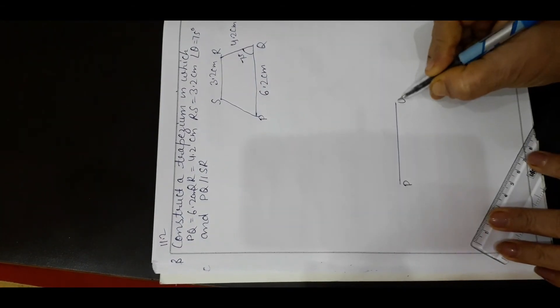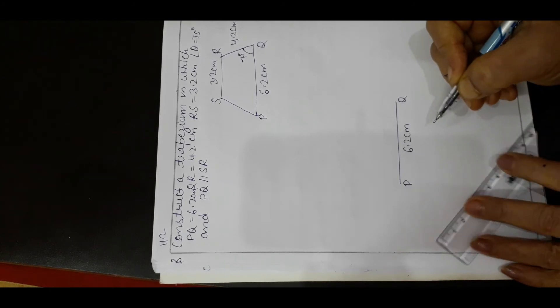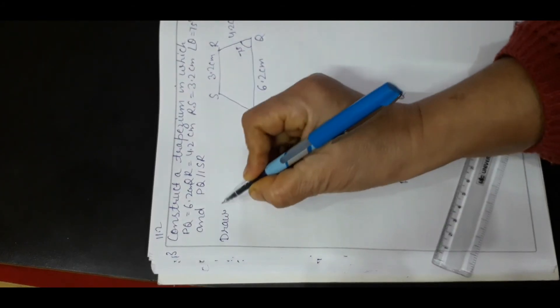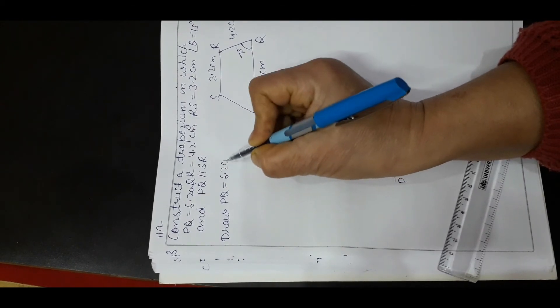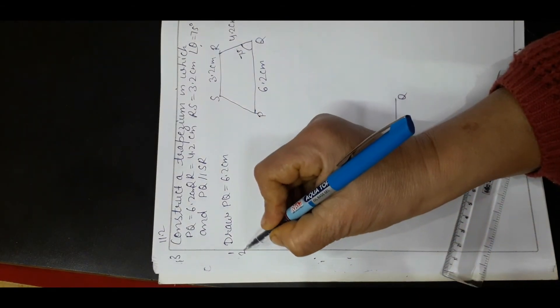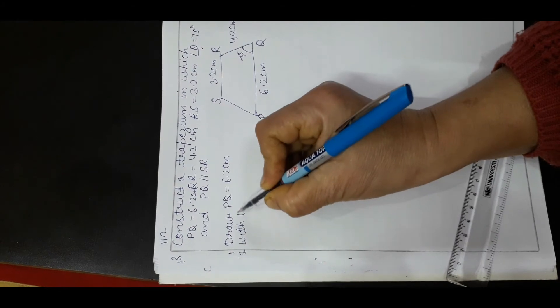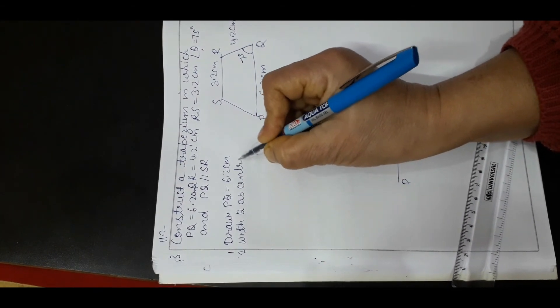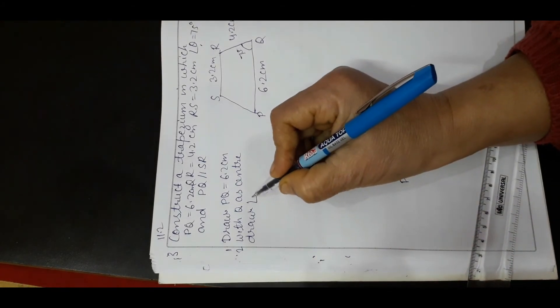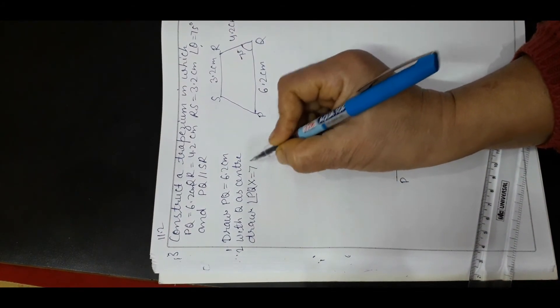Draw PQ equal to 6.2 cm. This is slightly different from what we have drawn so far. Then, with Q as center, draw angle PQX equal to 75 degrees.